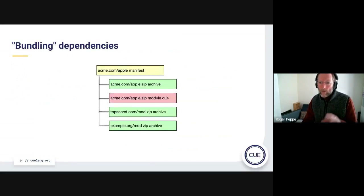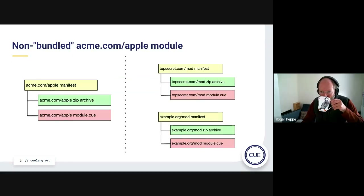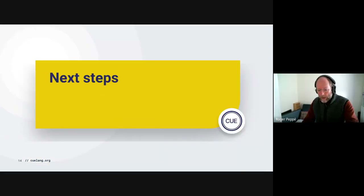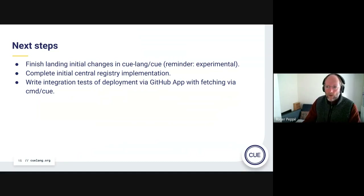There was another diagram as well — the original diagram where we've got everything all as part of the same thing, and this is the new approach we'll probably end up doing. Going forward, we're going to continue landing those changes in CUE, which is all experimental, and implement the GitHub app and that central registry deploy registry.